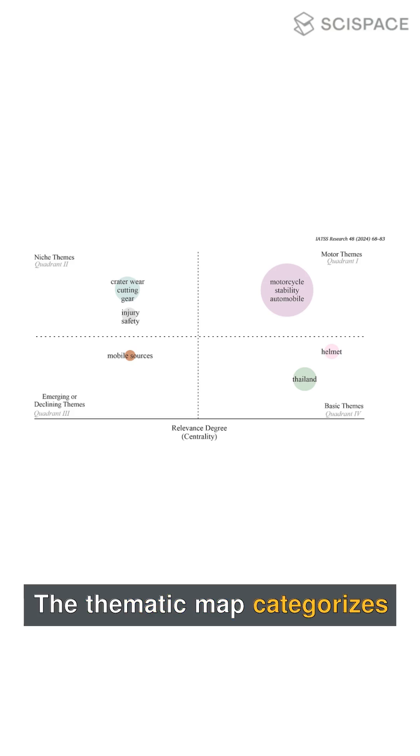The thematic map categorizes various research themes based on their relevance and development. It highlights key areas, such as motorcycle safety and vehicle dynamics, while also identifying specialized and emerging themes.